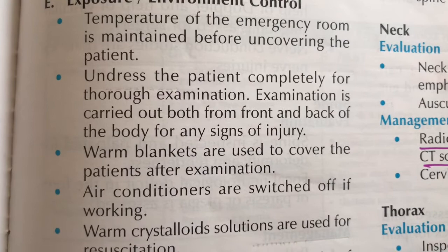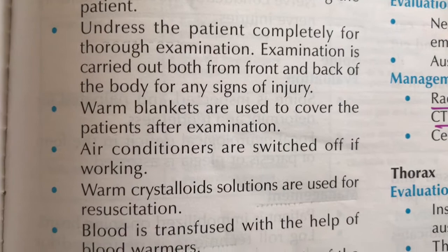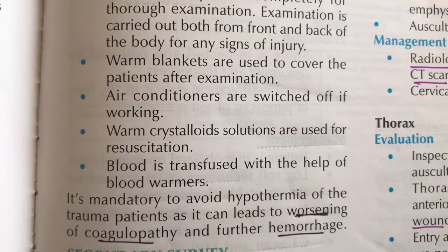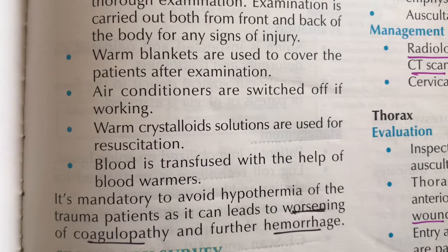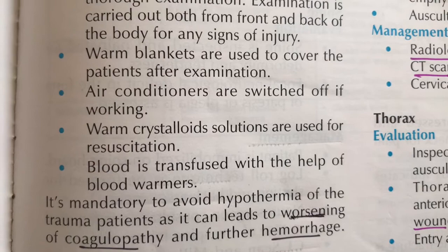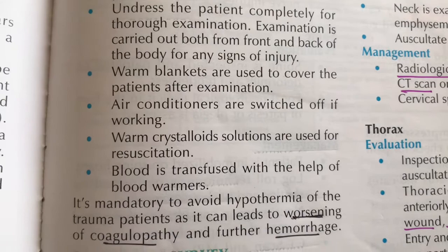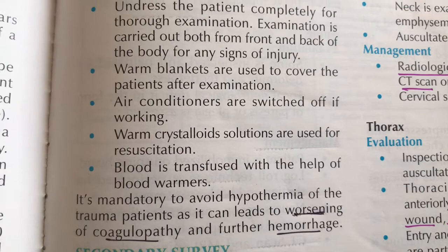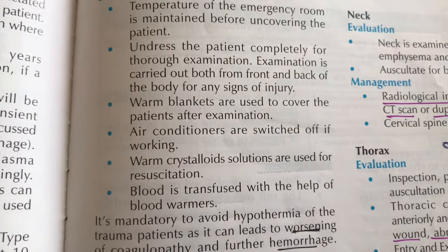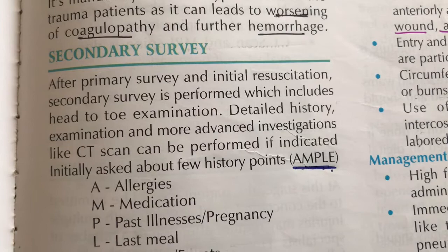Part E — Exposure and Environmental Control. We examine the patient from front and back looking for signs of injury. We maintain the patient's body temperature using warm blankets and warm crystalloid solutions. Blood is transfused using blood warmers to avoid worsening of coagulopathy and prolonged hemorrhage. This completes the primary survey of ATLS — Airway, Breathing, Circulation, Disability, and Exposure.